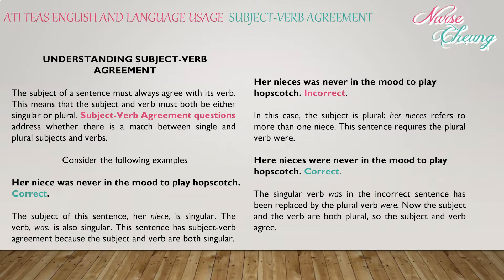Understanding subject-verb agreement: the subject of a sentence must always agree with its verb. This means that the subject and verb must both be either singular or plural. Subject-verb agreement questions address whether there is a match between singular or plural subjects and verbs. Consider the following example: 'Her niece was never in the mood to play hopscotch.' This is correct — the subject 'her niece' is singular, and the verb 'was' is also singular.